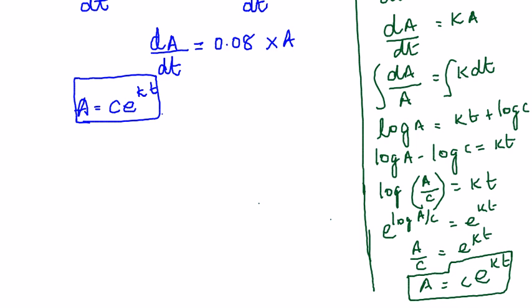So now proceeding, you know that A is equal to Ce^(kt). Therefore in this particular sum it becomes the principle at any given time t is equal to Ce^(0.08t).